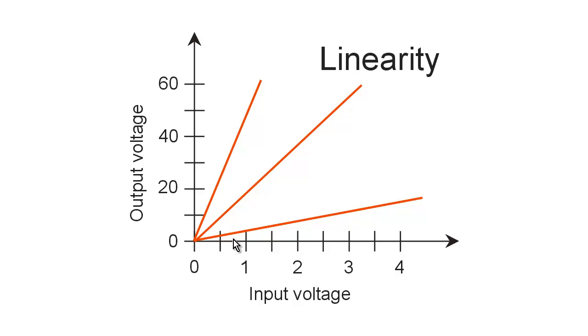So, whenever you graph the instantaneous input voltage versus the instantaneous output voltage in a linear amplifier, you're going to get a straight line. These are three examples. The gain or the amplification factor is relatively low here, relatively higher here, and even higher here. But in every case, you get a straight line for that graph.